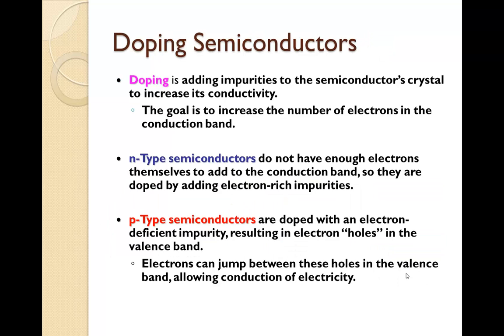Now, how do we make semiconductors? Well, doping is the adding of impurities in the semiconductor's crystal to increase its conductivity. The goal is to increase the number of electrons in the conduction band. There are two types of these: n-type and p-type. N-type semiconductors do not have enough electrons themselves to add to the conduction band, so they are doped by adding electron-rich impurities.